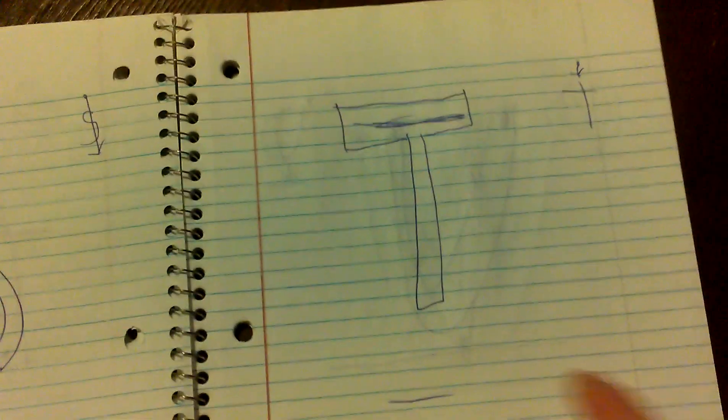And S is just three dots. A T is just a dash.